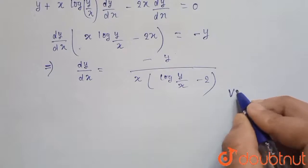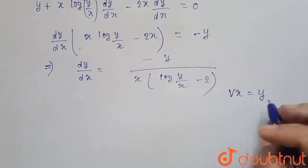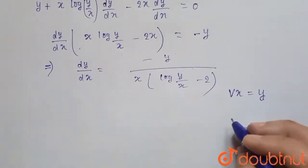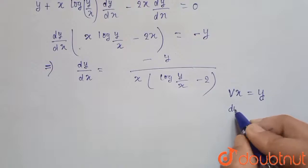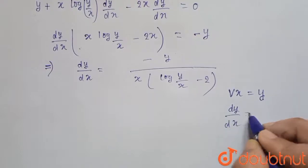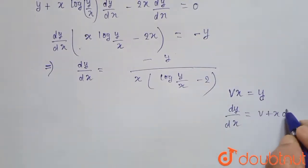Since this is a homogeneous equation, we put y equals vx. On differentiating with respect to x, we get dy/dx equals v plus x·dv/dx.